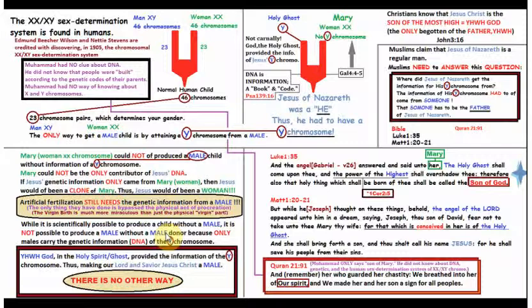You always have to get the information from a male in order to get a male. If you don't have that Y chromosome information, you can't have a man. And that information is only contained in a Y chromosome. So, Yahweh God, in the Holy Spirit, provided the information of the Y chromosome, thus making our Lord and Savior, Jesus Christ, a male. There is no other way. There's no other way to make a male.